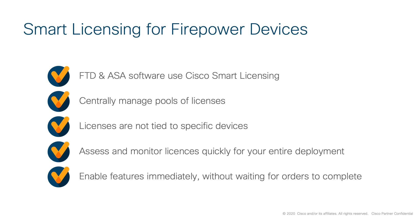When talking about smart licensing for firepower devices, Cisco smart licensing lets you purchase and manage a pool of licenses centrally. Unlike product authorization key, or PAK, licenses, smart licenses are not tied to a specific serial number or license key. Smart licensing lets you assess your license usage and needs at a glance. One of the many benefits is that it doesn't prevent you from using product features you have not yet purchased — you can start using a license immediately, as long as you are registered with the Cisco Smart Software Manager, and purchase the license later. This allows you to deploy and use features straight away, avoiding any potential delays due to purchase order approval.